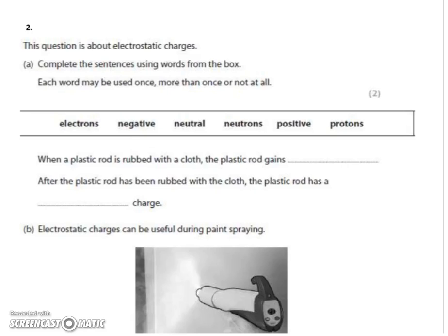Question two is all about electrostatics and you're asked to complete the sentences using the words from the box. When a plastic rod is rubbed with a cloth, the plastic rod gains electrons — there's nothing else on there that it can gain. Remember, protons can't move; they're right at the center of the atoms. Electrons are the negative charges on the outside that are easily lost or gained through charging by friction.